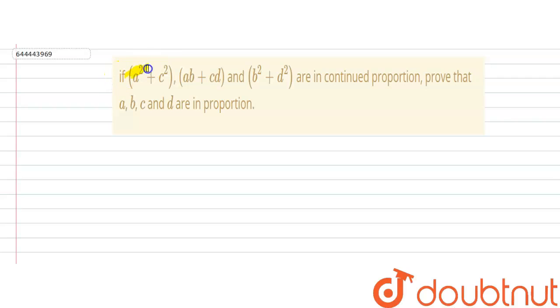If a² plus c², ab plus cd and b² plus d² are in continued proportion, then prove that a, b, c and d are in proportion.